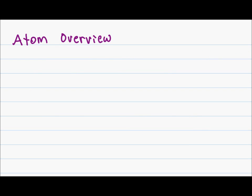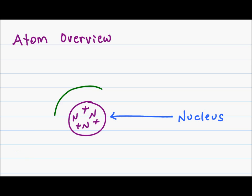So we know what's in an atom, now let's see what the atom looks like. The center of every atom, which contains all the mass, is called the nucleus. The nucleus contains your protons and your neutrons. Around the nucleus, we have what are called shells or orbitals.